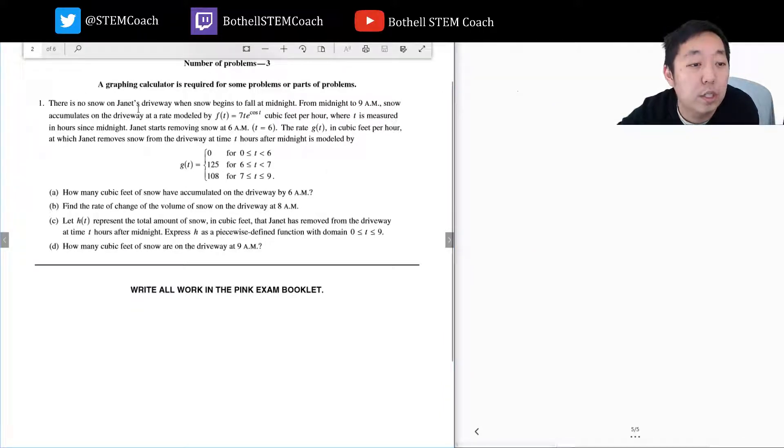Let's start. There's no snow on Janet's driveway when the snow begins to fall at midnight. From midnight, snow accumulates in the driveway at a rate modeled by a cubic feet per hour, where t is measured in hours since midnight. I'm noticing a pattern - these first questions are almost always some kind of rate question with some integral or derivative or some function.